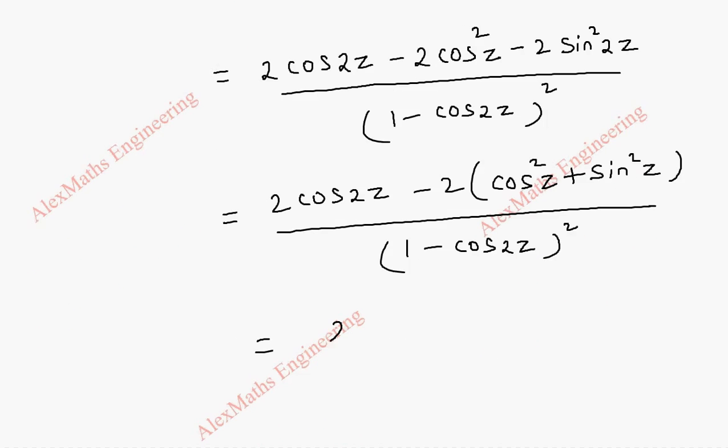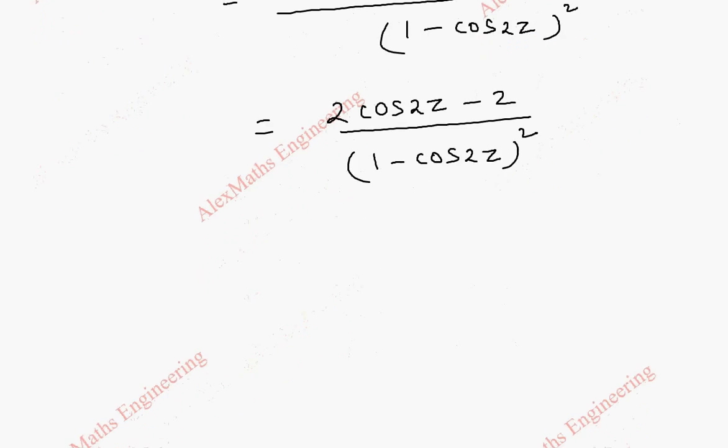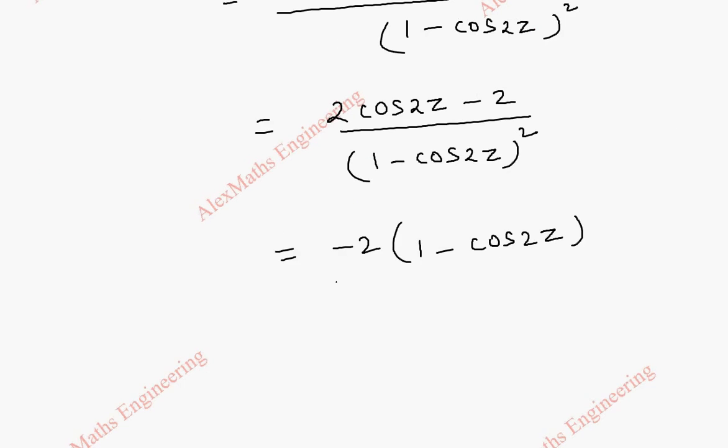So numerator is 2 cos 2z minus 2 whole division 1 minus cos 2z whole square. Again 2 can be taken out common but we shall take minus 2 common. So this becomes 1 and this becomes minus cos 2z. So that it is easier for us to cancel the terms.